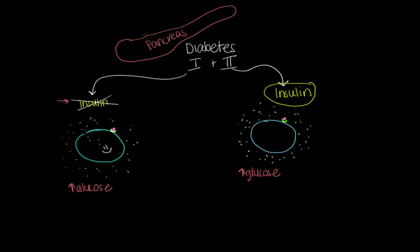Just to refresh: the pancreas is what makes our insulin. In type 1 diabetes, the pancreas is not making insulin, therefore our cells cannot receive the glucose they need for energy and it's just going to float around inside our blood system. In type 2 diabetes, our pancreas does make insulin, but our cells are not sensitive to it, so that glucose is not able to get in and we have that same high blood level of glucose circulating.